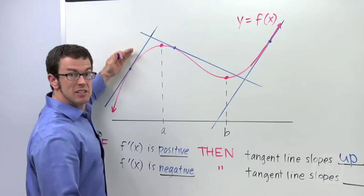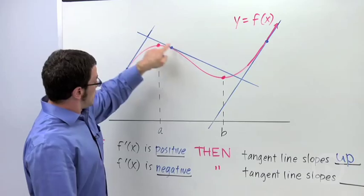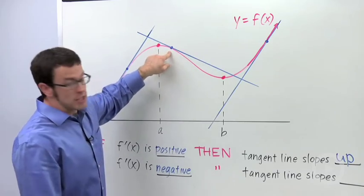Because f prime gives us the slope of the tangent line at a given point. Now here, f prime would be negative. And so the tangent line would slope down.